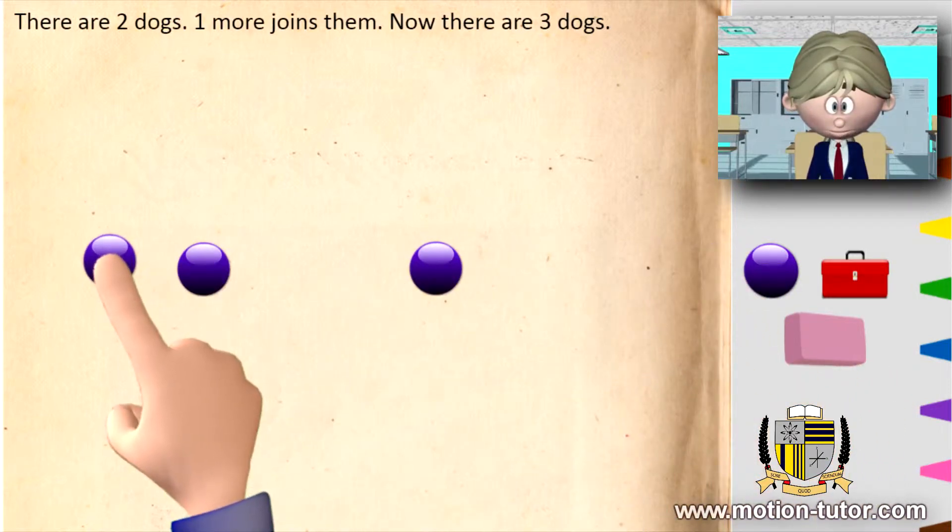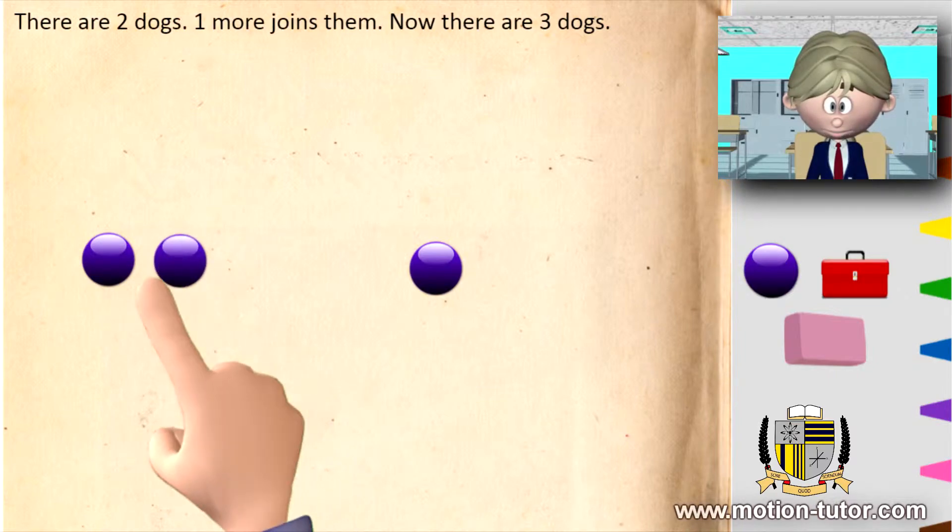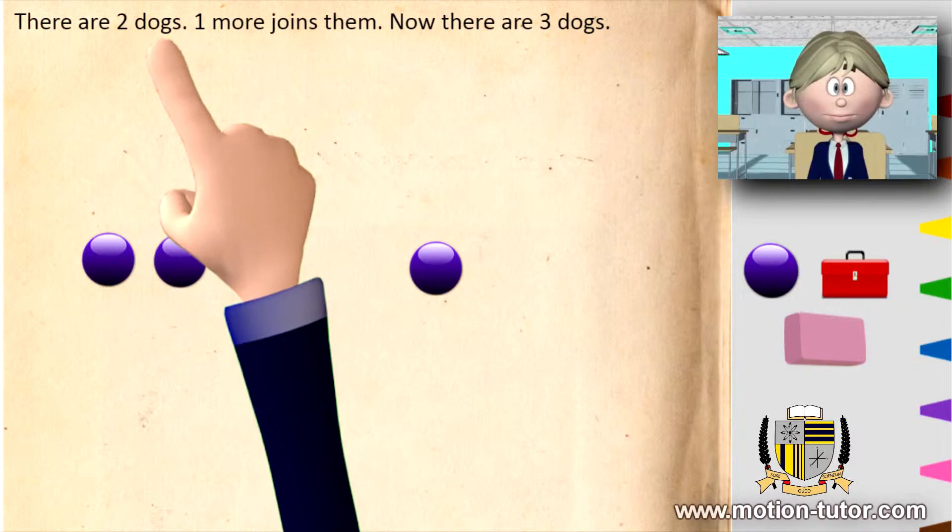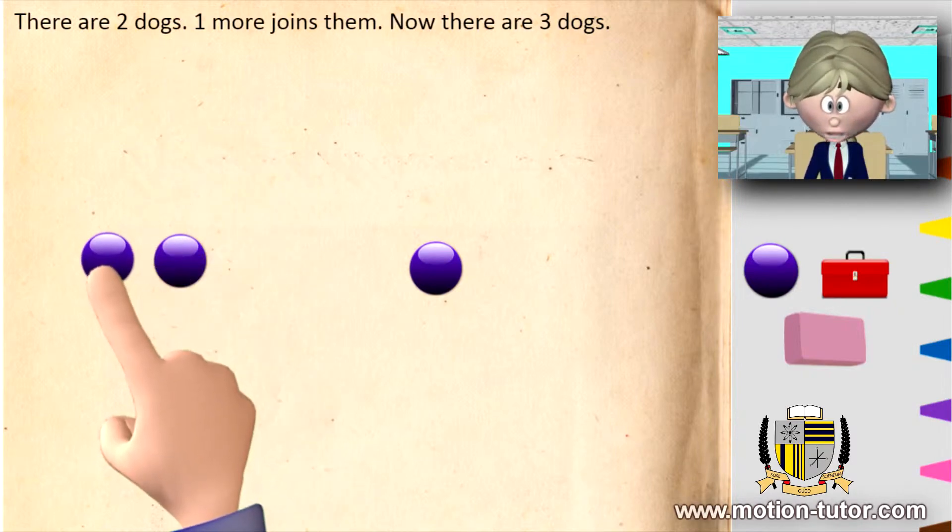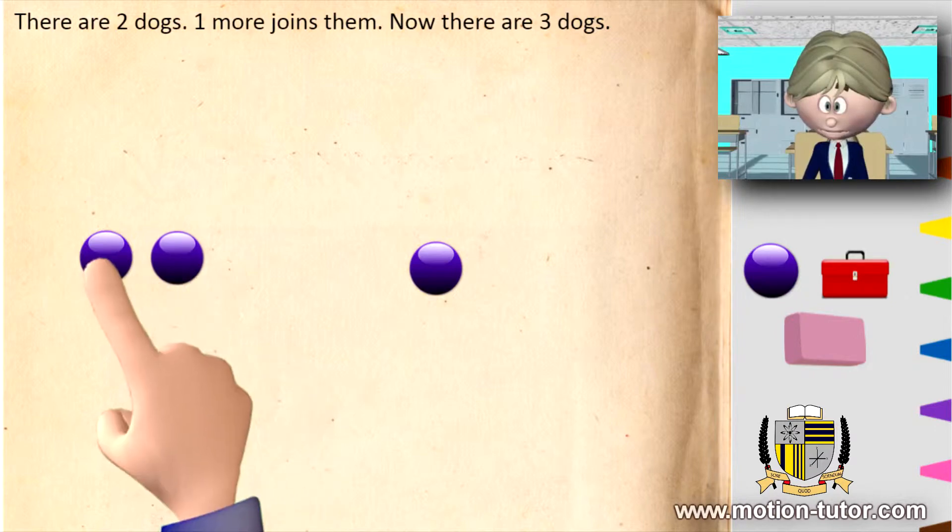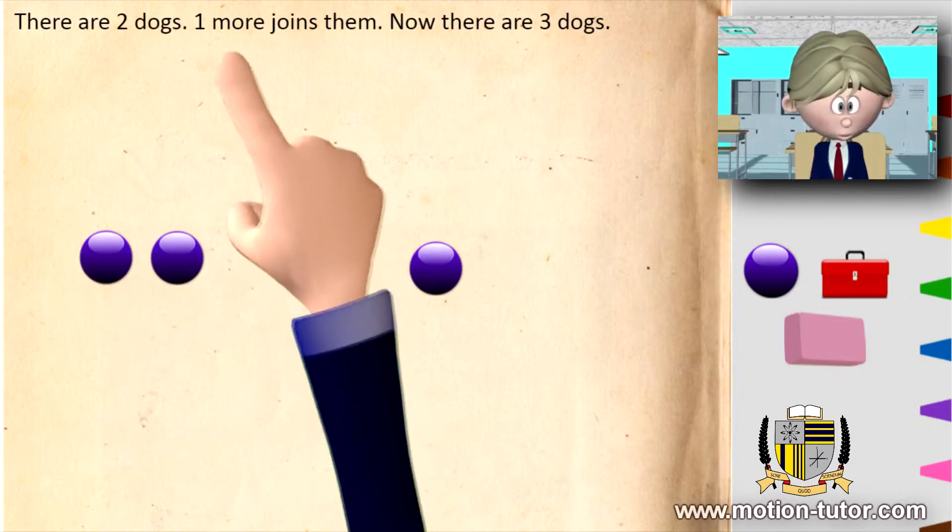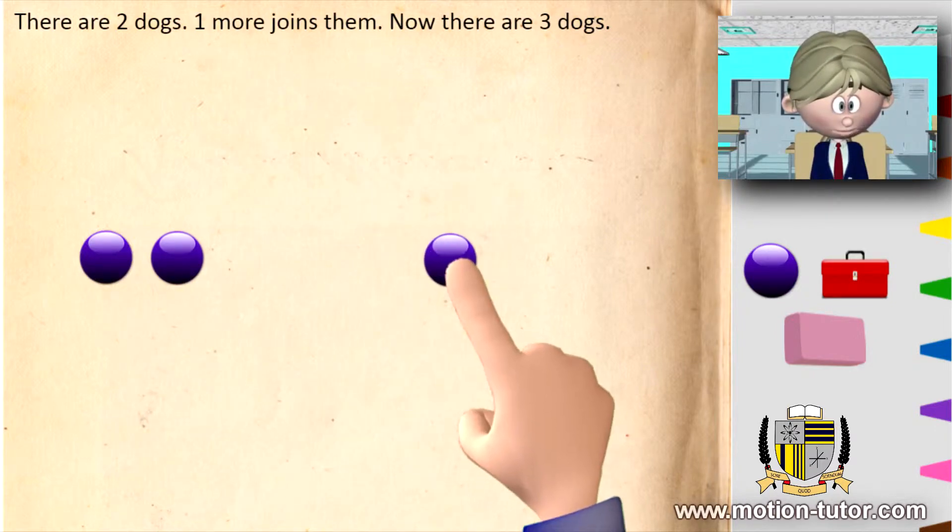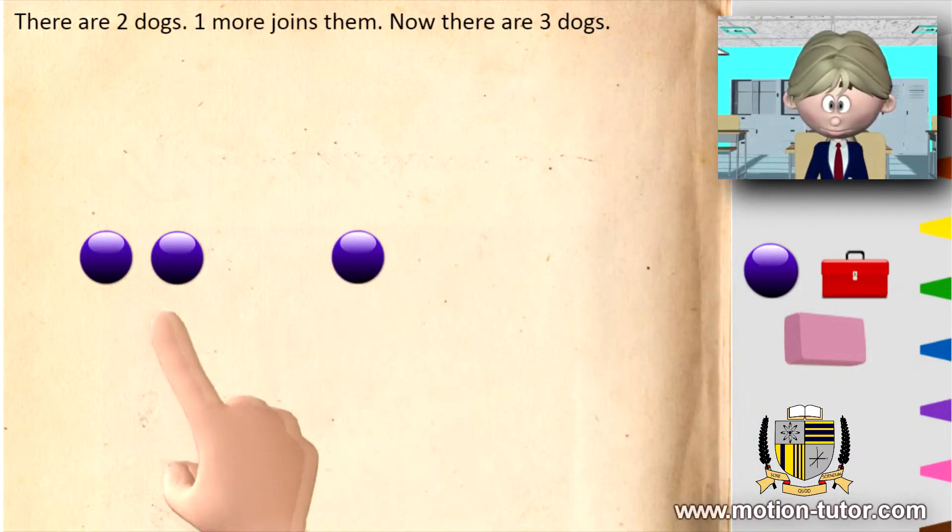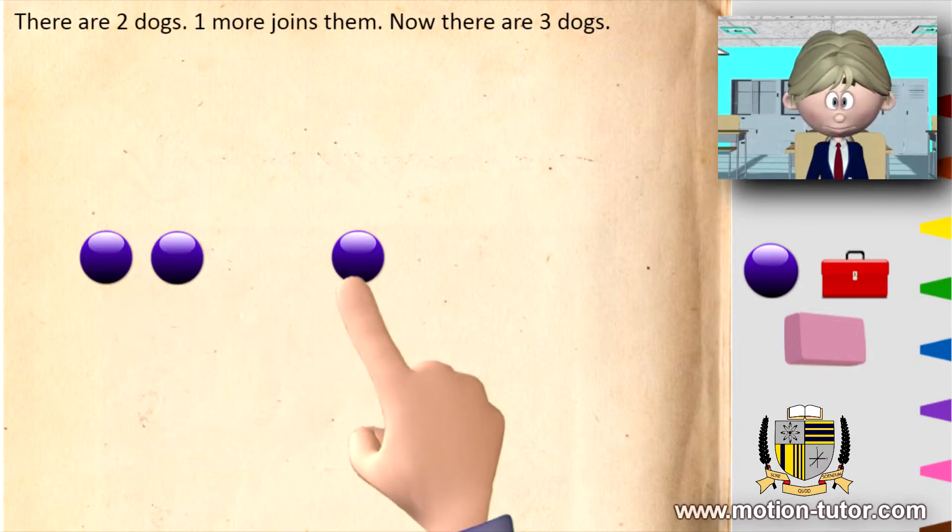As you can see, these two can represent two dogs because there are two dogs. So we will use these to represent two dogs: dog one, dog two. One more joins them, and here's the one more dog coming in and joins them. Now there are three dogs: one, two, three. So this is addition. Here are the two dogs, and here's the one dog.